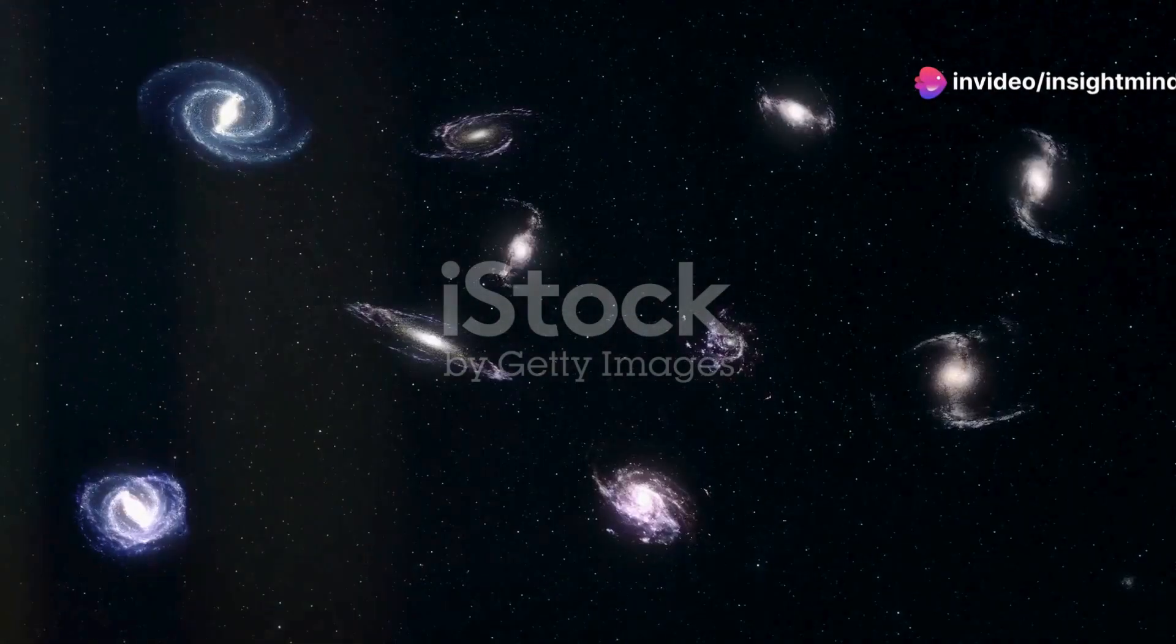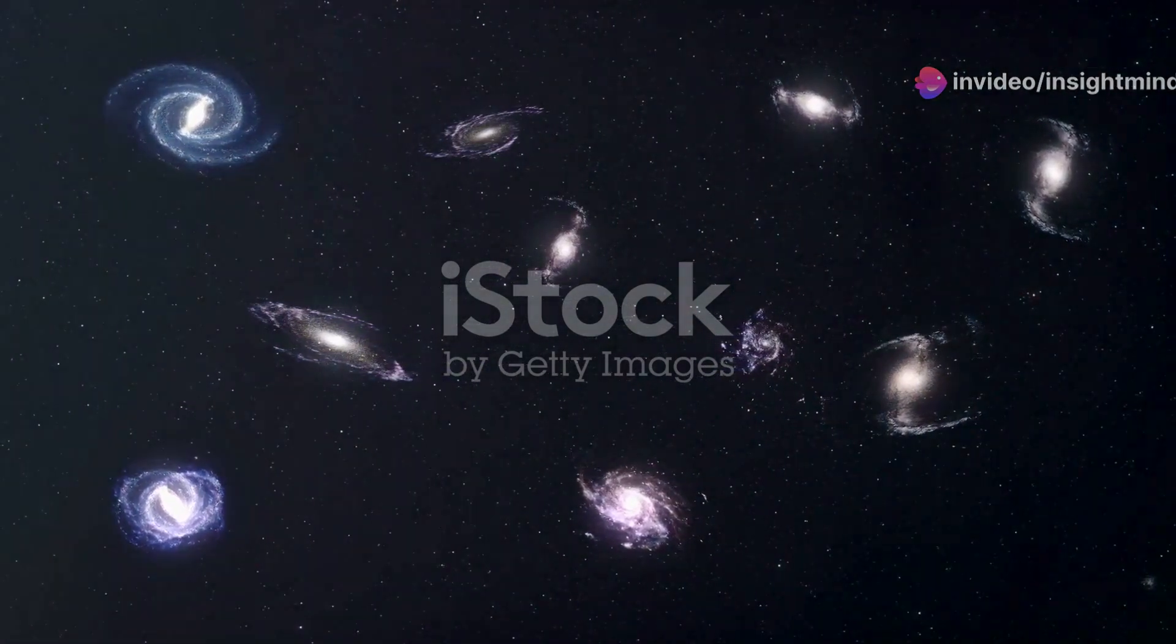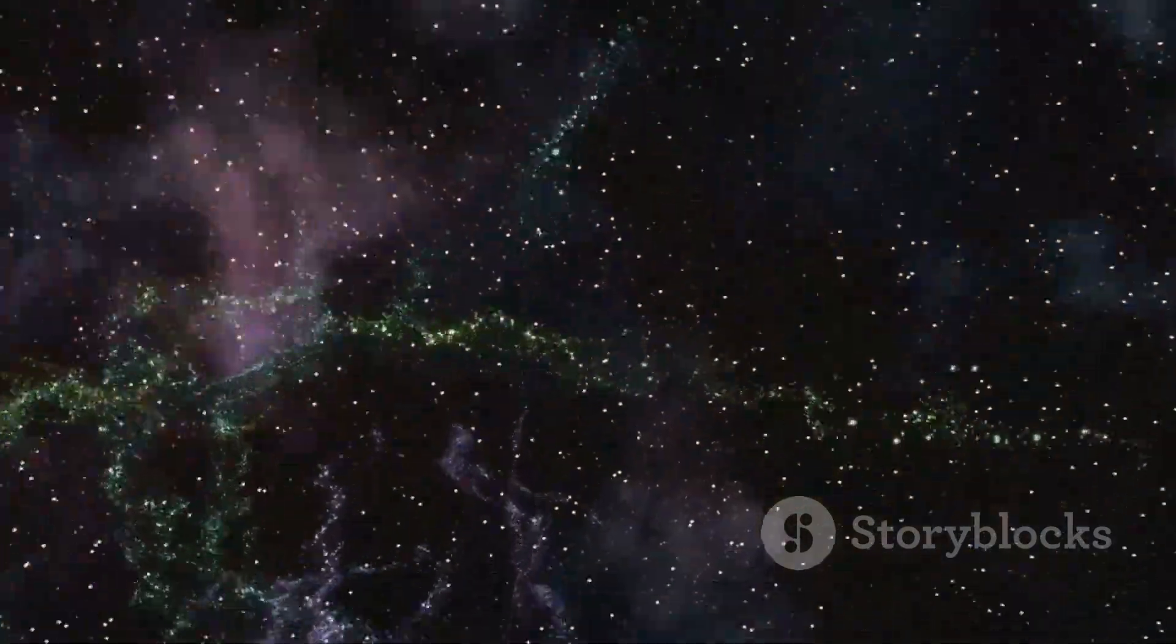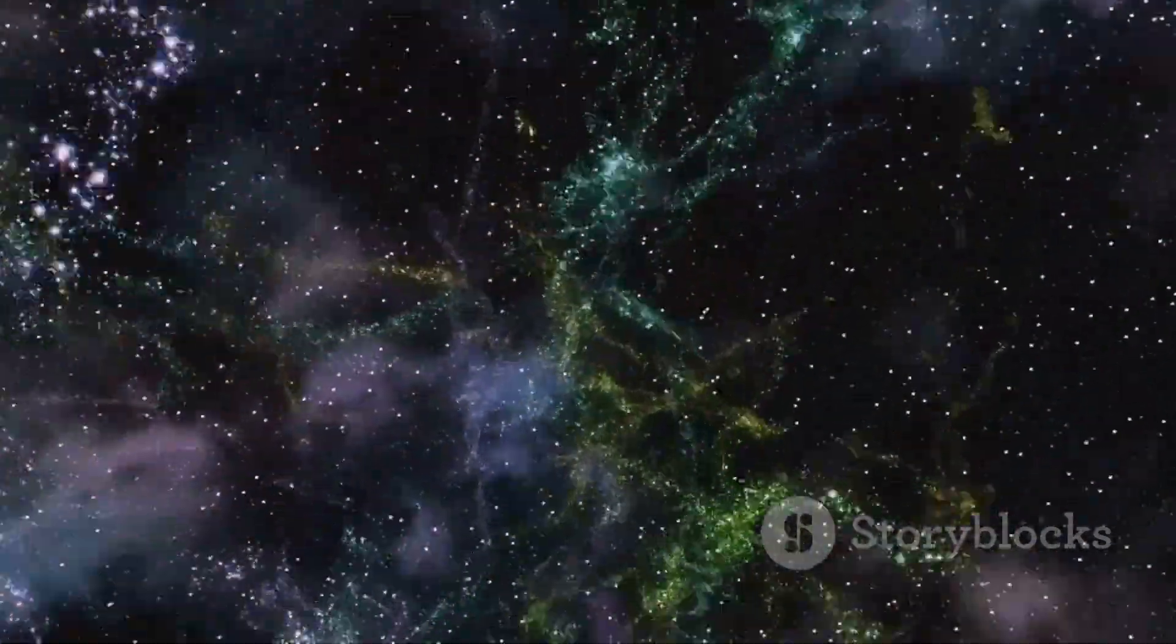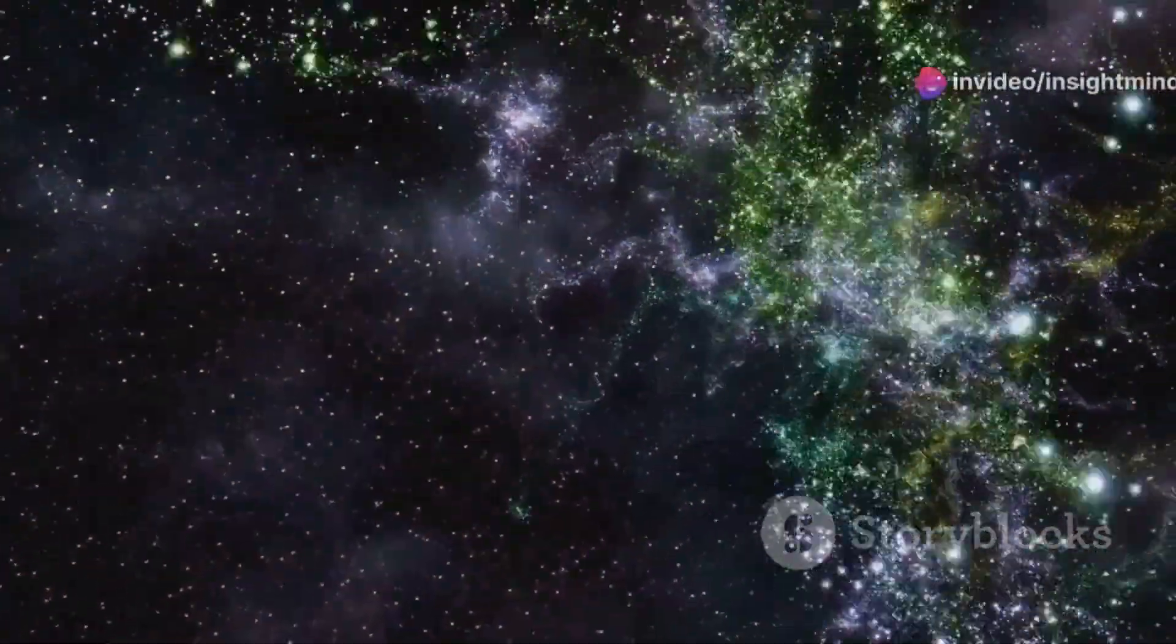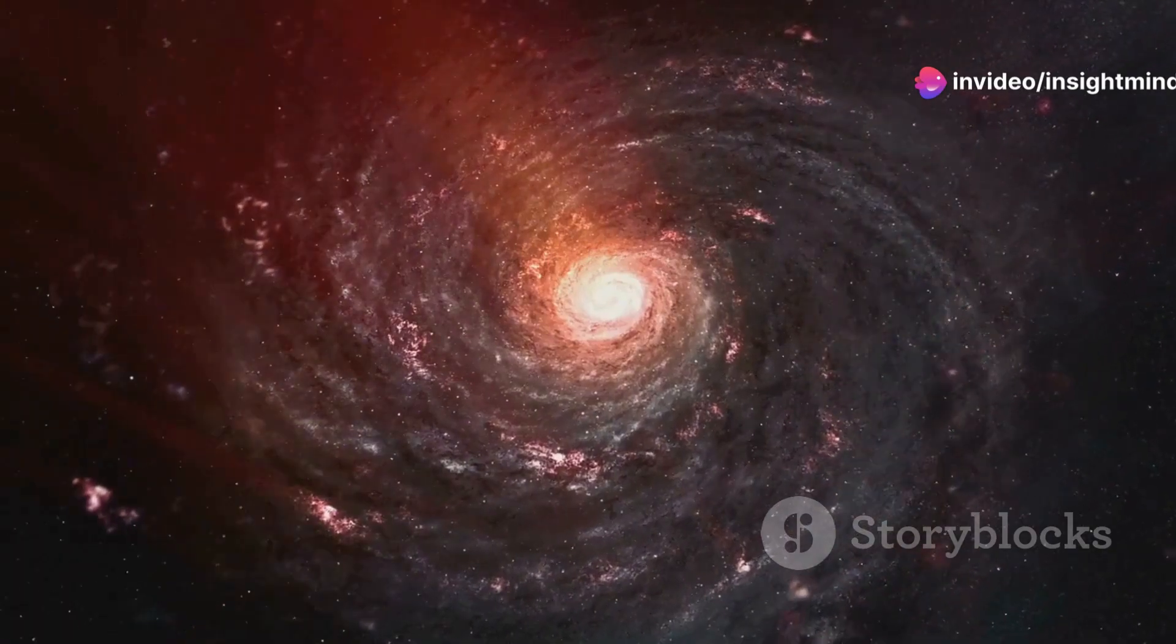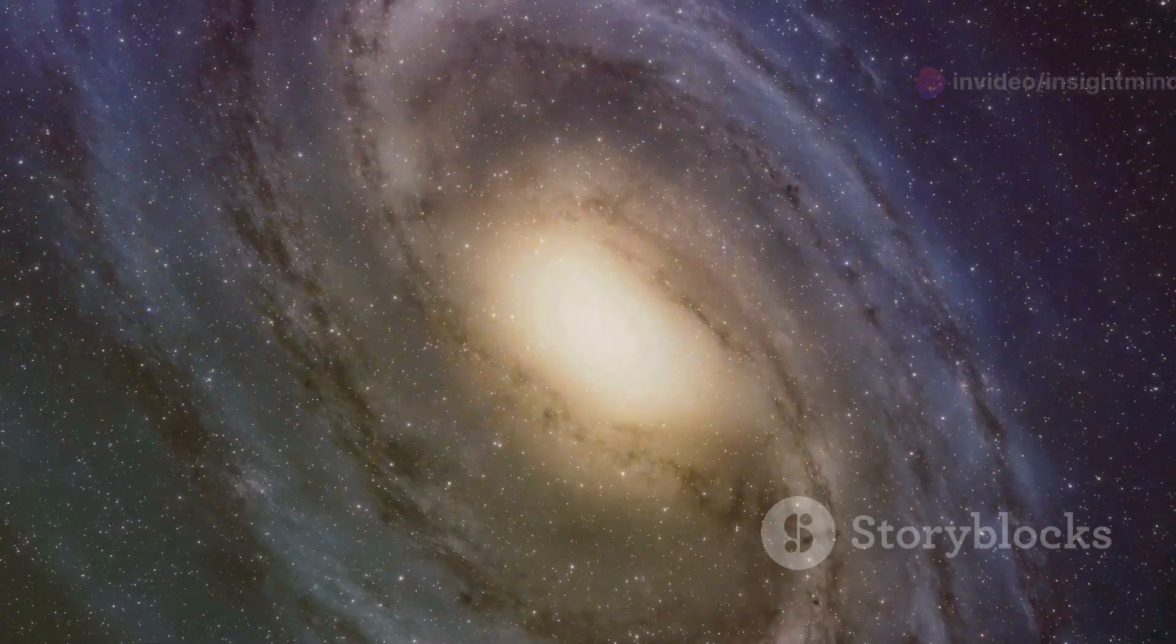Our first stop takes us to the constellation of Serpens, home to IC 1101, the largest known galaxy in the observable universe. Imagine a galaxy so vast, so immense, that it dwarfs our own Milky Way, spanning over 5 million light years across. IC 1101 is a giant elliptical galaxy, a cosmic metropolis populated by trillions of stars. Its smooth, featureless appearance stands in stark contrast to the spiral arms of our own galaxy.